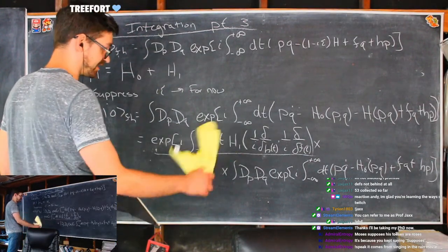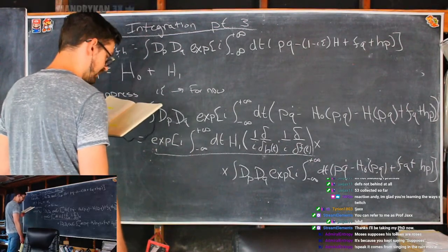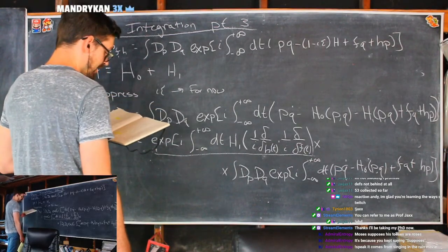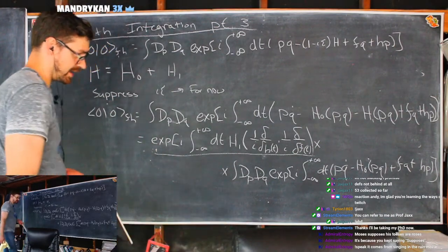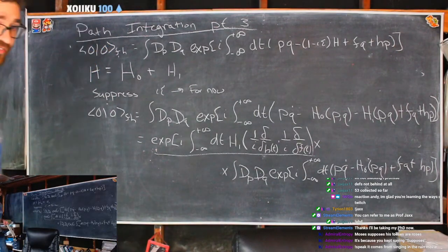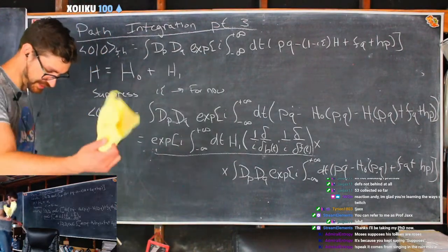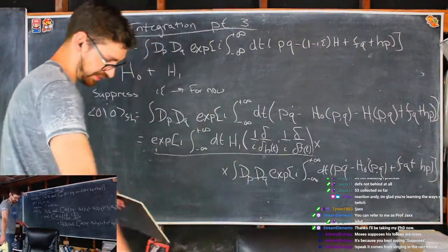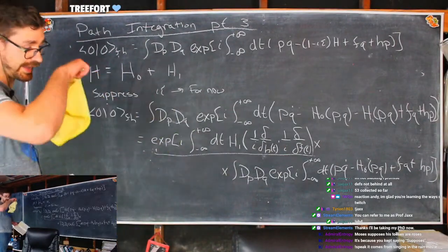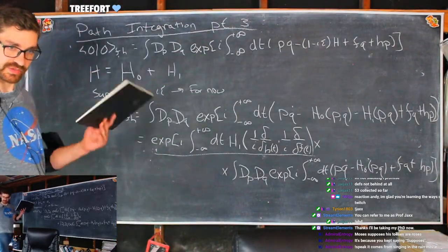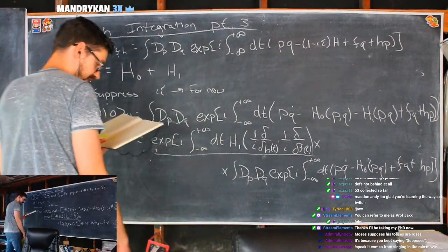This works well because H-sub-zero is a solvable Hamiltonian. We want to get to Lagrangian mechanics, because the action looks really nice in Lagrangian form. So we have four conditions to get to Lagrangian formalism.